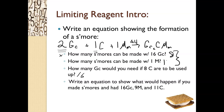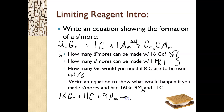A great example is this last one: write an equation to show what would happen if you made s'mores with 16 graham crackers, nine marshmallows, and 11 pieces of chocolate. So we have 16 GC, 11 pieces of chocolate, and nine marshmallows. Based on those ingredients, how many s'mores do you think we can make? If you said eight, that would be correct — we could make eight s'mores.